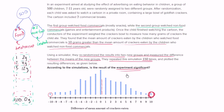In most studies and experiments, the threshold for something being considered statistically significant is if the probability of that happening by chance is less than five percent. Since this result is less than one percent, I would definitely say that this experiment is significant.